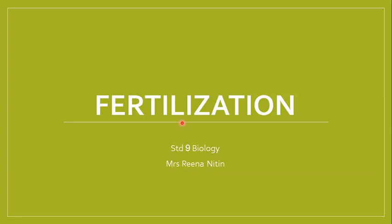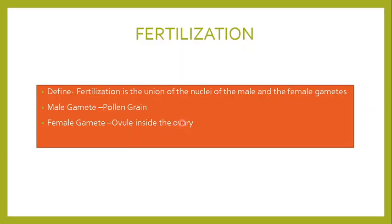Good morning students. Today we are going to study the last part of the chapter called fertilization. Fertilization is the union of the nuclei of the male and the female gametes — that is the union of the nucleus of the male, which is the pollen grain, with the nucleus of the female, which is the ovule.